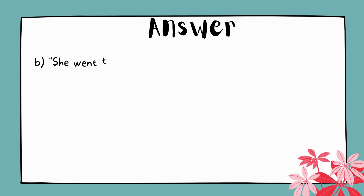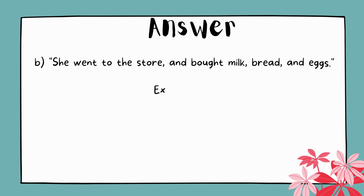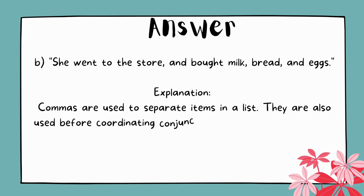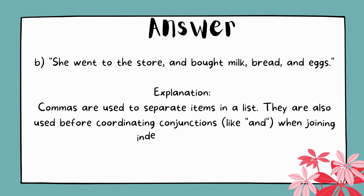The answer is B. She went to the store and bought milk, bread, and eggs. Explanation: Commas are used to separate items in a list. They are also used before coordinating conjunctions like 'and' when joining independent clauses.